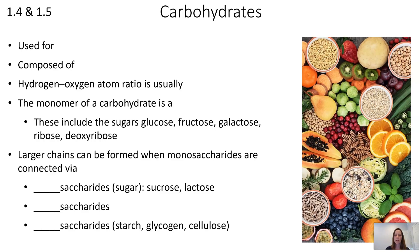Let's start with carbohydrates. First, let's see what you might remember about carbohydrates from past experience. What are carbohydrates used for? What are they composed of in terms of elements? What is the hydrogen-oxygen ratio you usually find in carbohydrates? What's the name of a monomer of a carbohydrate? How are larger chains of carbohydrates formed, and what are the names of those larger chains?